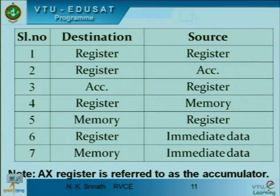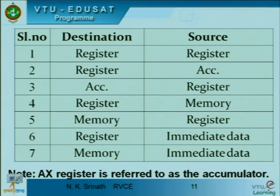Register to register is possible, register to accumulator is possible. When I say accumulator it is the AX register — the speed of operation is faster, hence explicitly mentioned. Memory to register is possible. Register with immediate data means the data available in the instruction can be added to the register and stored back. Similarly, immediate data can be added to the content of a memory location and stored back into memory.